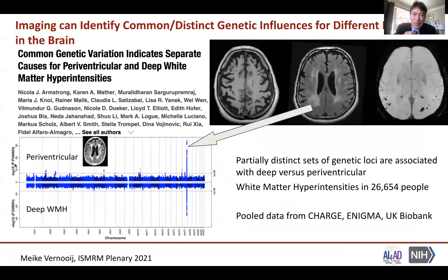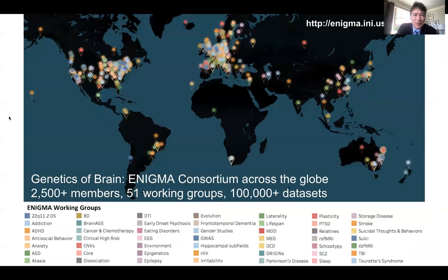On the genetic side, imaging can help identify distinct genetic drivers of processes in the brain. Work by the CHARGE and ENIGMA consortia, led by Nicola Armstrong, found that the distribution of white matter hyperintensities — a sign of vascular disease — was different in different patients, and the genetic markers associated with these changes were also partially different. This shows how imaging-based subtyping is valuable for understanding genetic drivers of different processes. In ENIGMA, an international consortium, very large-scale global genetic studies of brain measures are ongoing, with over 2,000 sites collecting over 10,000 neuroimaging datasets.